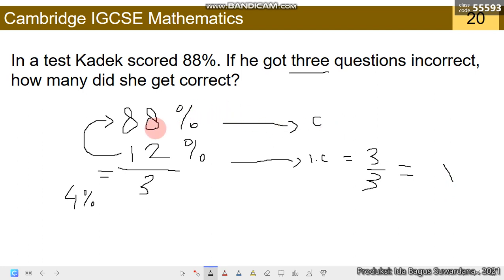So if 88%, how many questions? Because 4 to 88 is times 22. So I will times it also by 22. I get 22 correct questions.